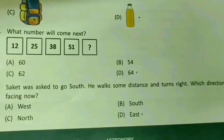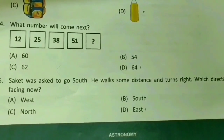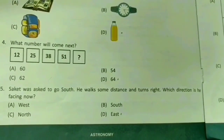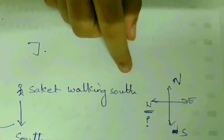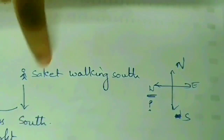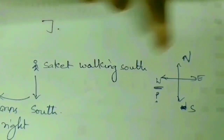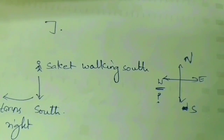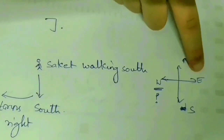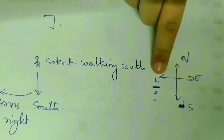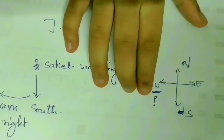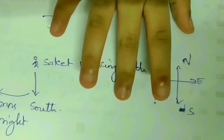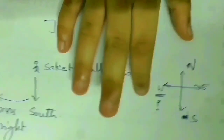Question 5: Saket was asked to go south. He walks some distance and turns right. Which direction is he facing now? Saket is walking south and turns right from south. Right from south is west, so the answer is west.